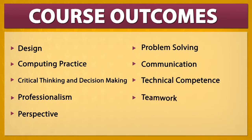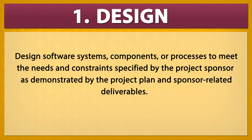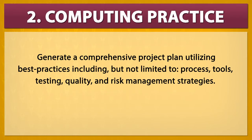Course Outcome 1, Design. You'll be expected to design software systems, components, or processes to meet the needs and constraints specified by the project sponsor as demonstrated by a project plan and sponsor-related deliverables. Course Outcome 2, Computing Practice. You'll generate a comprehensive project plan utilizing the best practices that you've already learned in the software engineering program, including but not limited to process, tools, testing, quality, and risk management strategies.